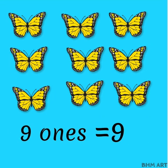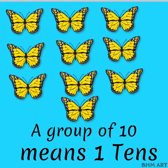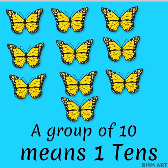9-1s means number 9, and when we have 10, it makes a group of 10. A group of 10 means 1-10s.